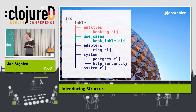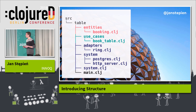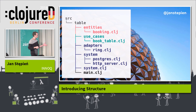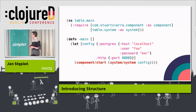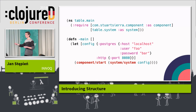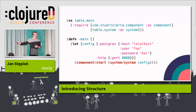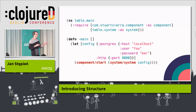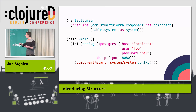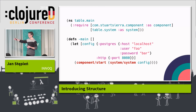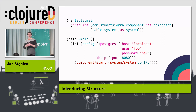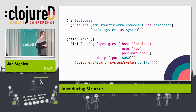The only missing piece is a small main namespace used to start the whole application from the command line. Given our system, we define a main function. We have a configuration — here I've hard-coded it, but you'll probably read it from a file, from an environment variable, from a service like ZooKeeper depending on the situation. Then we pass this configuration to the system function, which gives us the system map. We start it and expose the whole system to the outside world.